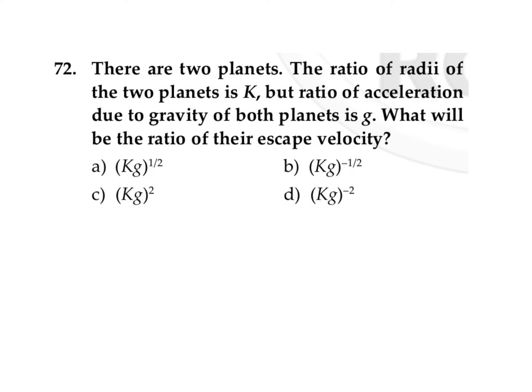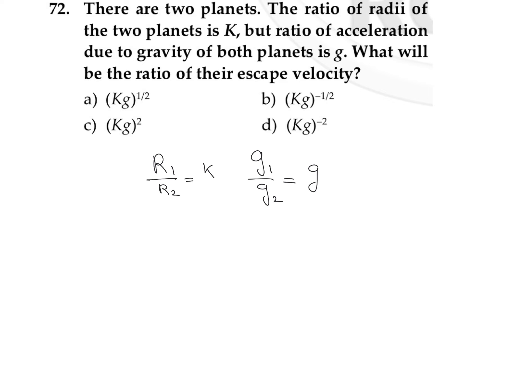The ratio of radii of two planets is k, so we can take it as radius of first planet divided by radius of second planet is k. The ratio of acceleration due to gravity is g, so we can take it as acceleration due to gravity on the first planet divided by acceleration due to gravity on the second planet is g. What will be the ratio of their escape velocity?